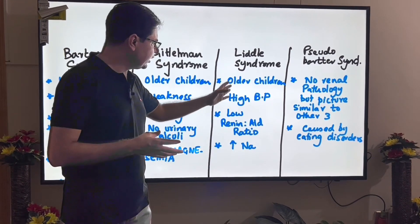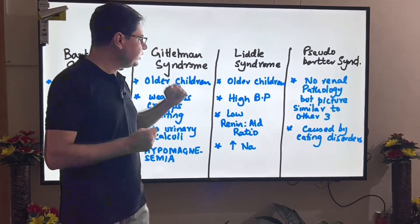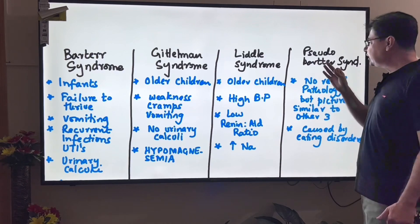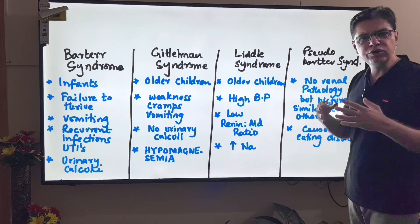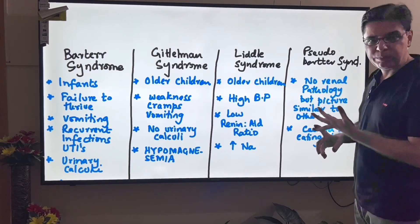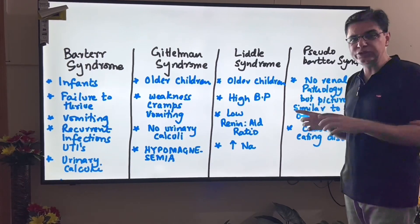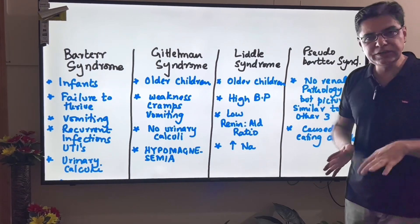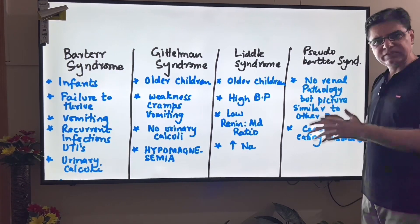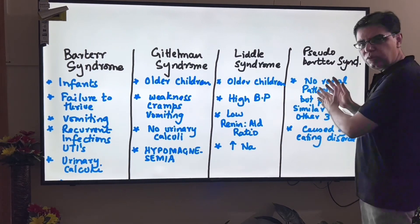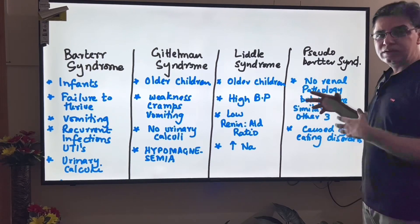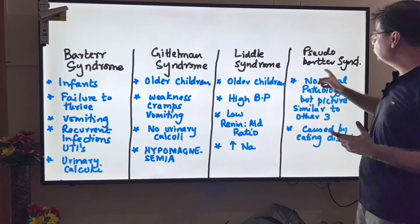Pseudo-Bartter syndrome — 'pseudo' meaning false — looks like Bartter syndrome but there is no renal tubular pathology. It presents with hypokalemic hypochloremic metabolic alkalosis and typically occurs in adolescents with mental health issues and eating disorders such as bulimia nervosa or anorexia nervosa. These are most often girls with purging behaviors whose deranged diet produces a metabolic picture mimicking Bartter syndrome.